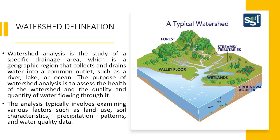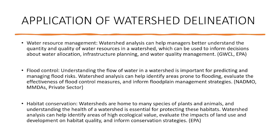Basically, watersheds help us to analyze drainage areas in which water collects or drains into a river, lake, or ocean, and they help us examine other factors such as soil characteristics, precipitation, and the general land use of the area. Having described what watershed delineation is, let's now move on to the most important aspect: how do we apply watershed delineation in managing or tackling real-world problems?